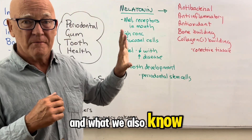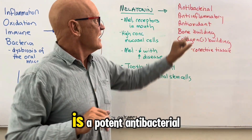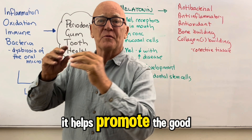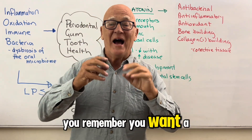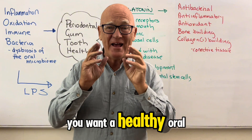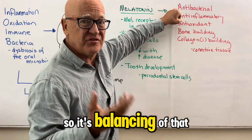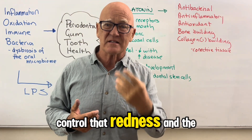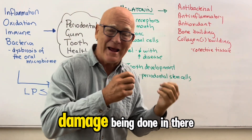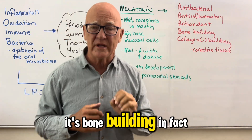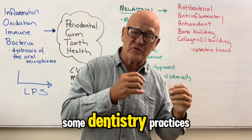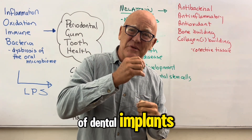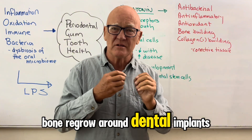Melatonin, from a broader perspective, is a potent antibacterial. It kills the harmful bacteria, but it also helps promote the good bacteria in the mouth — balancing the oral microbiome. It's anti-inflammatory, helping control redness and soreness. It's antioxidant, stopping damage being done. It's bone-building — in fact, some dentistry practices now use melatonin in dental implants to help bone regrow around them, and this is happening in studies all around the world.